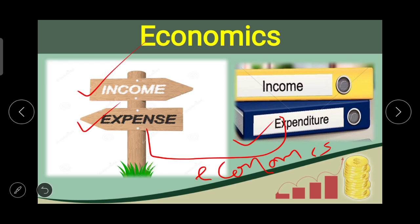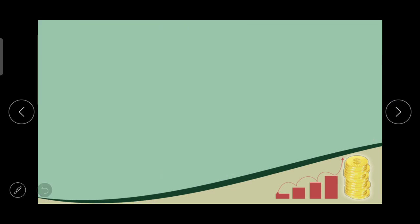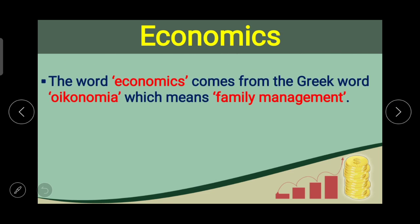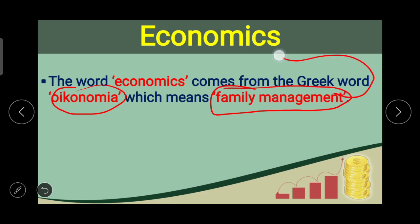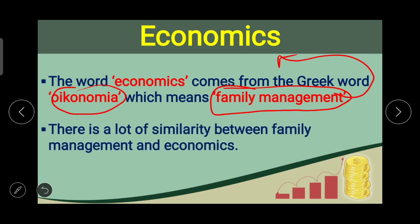You can also ask your parents how they manage the expenditure of the family. Similarly, if we go into detail about the word 'economics,' it comes from the Greek word 'oikonomia,' which means family management. So directly or indirectly, the meaning of economics is nothing but family management — there is a lot of similarity between the two.